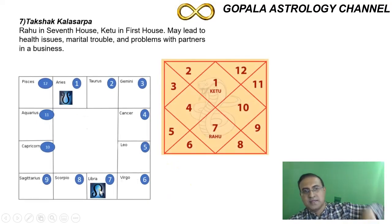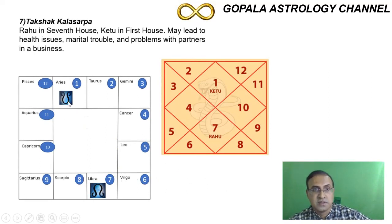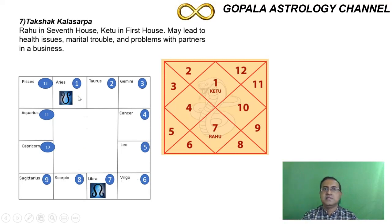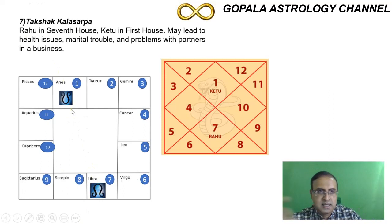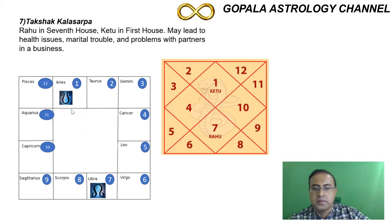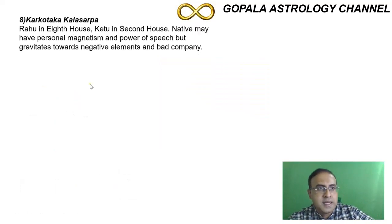In Shaka Kala Sarpa Dosha, the combination produces the same marital troubles and problems with life and business partners — misunderstandings happen when this alignment is in the first and seventh house axis, whether Rahu is in the first or the seventh house. The next one is called Karkota Kala Sarpa Dosha — here Ketu goes to the second house and Rahu moves to the eighth house. The eighth house is very important for longevity and health, so when a negative planet like Rahu goes there, it causes serious health problems.